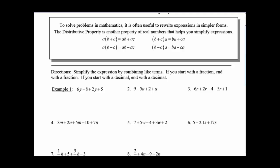We have 6Y minus 8 plus 2Y plus 5. Notice, we have two expressions here that have Y's in them. So we can add them together. We have 6 plus 2 gives us 8Y. And then we can add that negative 8 and 5 to give us negative 3.